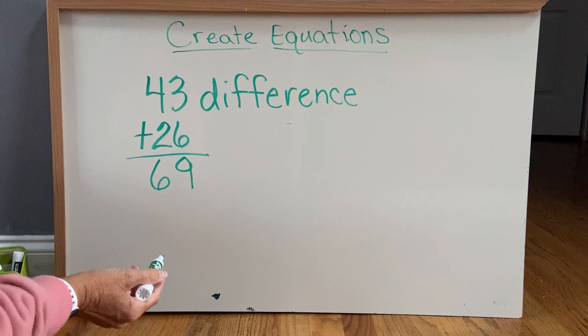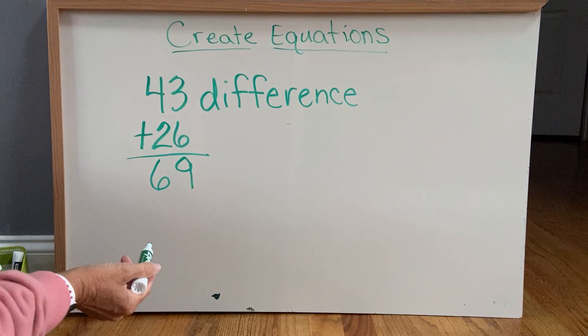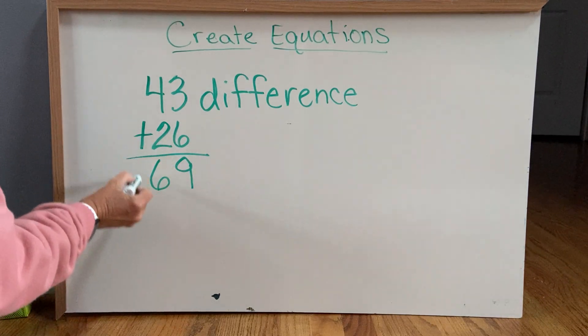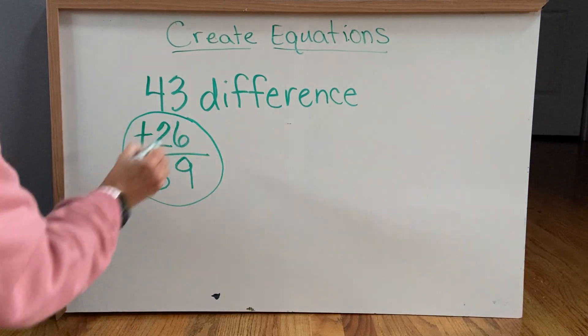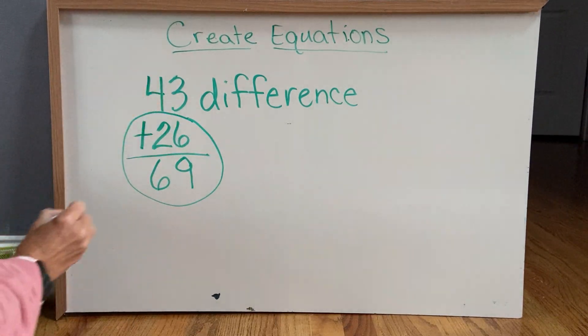Now just like when we were checking our answer in the subtraction problems, we can do the same with this. If we take these two numbers and we subtract, we should get 43.